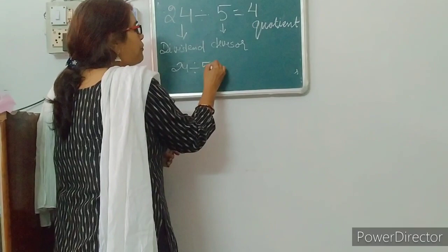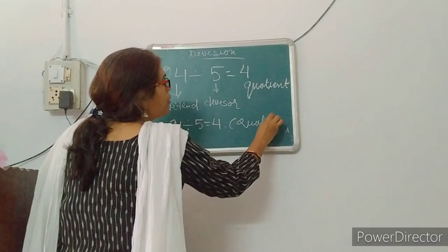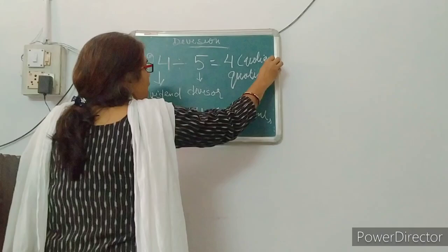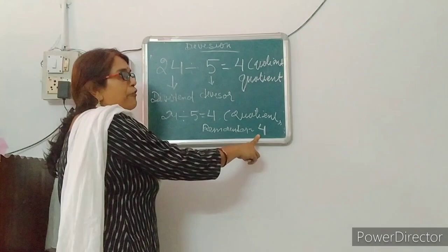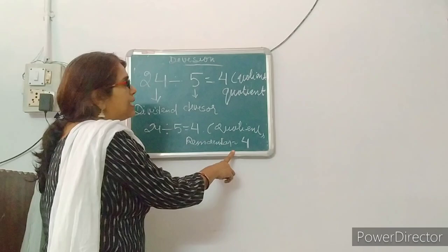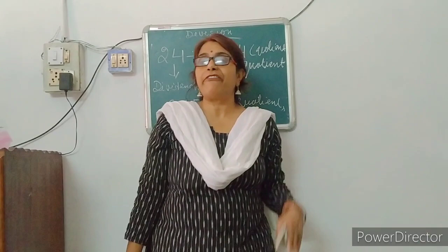Here, 4 is the quotient. And the number of chocolates left over — that means remainder — is equal to 4. In this way, we will learn the terms in division. In division, there are 4 terms: dividend, divisor, quotient, and remainder.